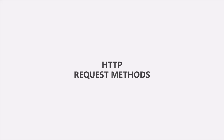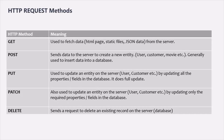So depending on the intention of the request, we use HTTP methods. There are many types of request methods available, but the five most commonly used and important ones are GET, POST, PUT, PATCH, and DELETE. These are the five most commonly used HTTP methods when developing a backend application. Let's briefly understand the use of each of them.